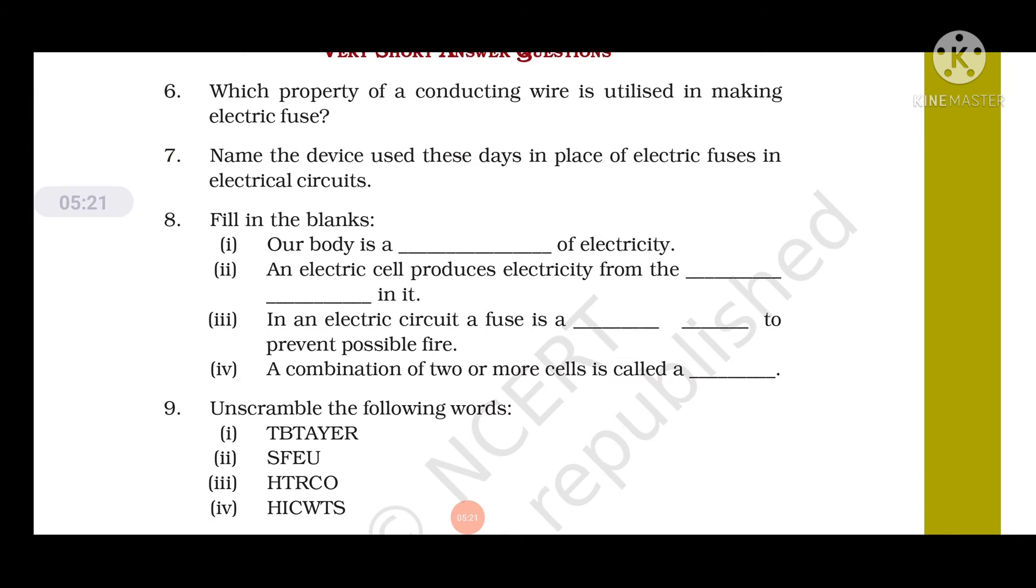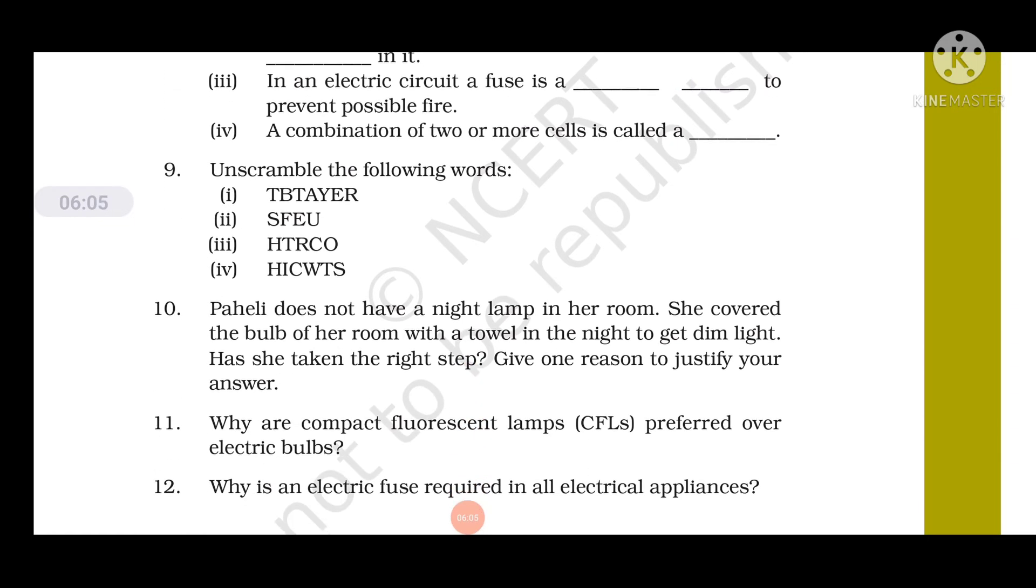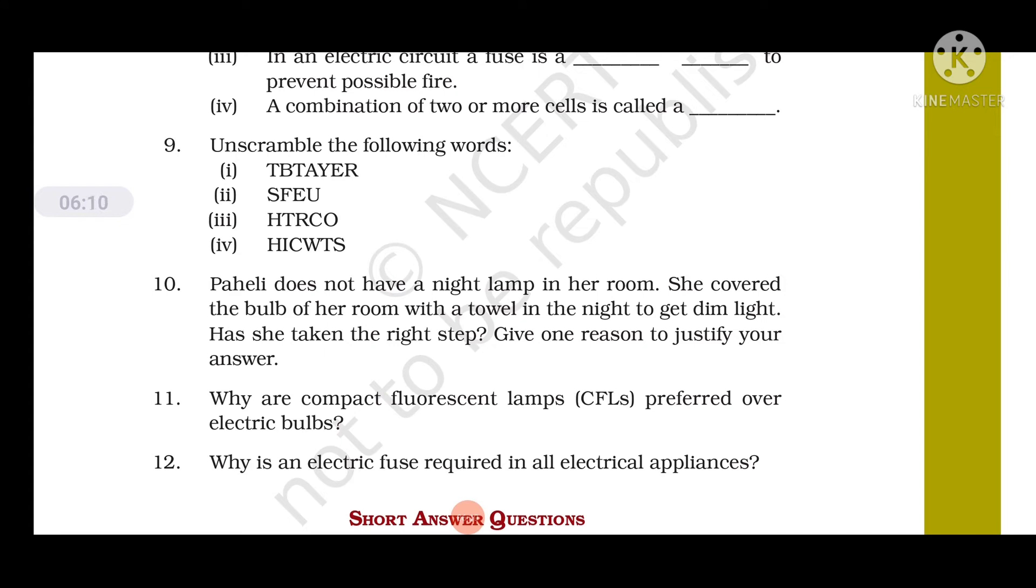Question 8: Filling the blanks. Our body is a conductor of electricity. An electric cell produces electricity from the chemicals which are stored in it. In an electric circuit, a fuse is a safety device to prevent possible fire. A combination of two or more cells is called battery. Question number 9: Unscramble the following words. Number one should be BATTERY, this word should be FUSE, the third one should be TORCH, and the last one should be SWITCH.